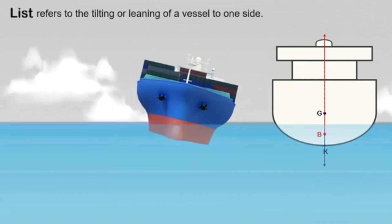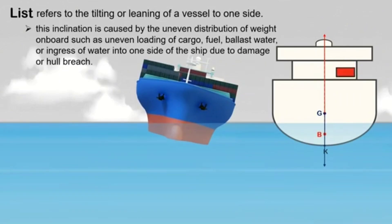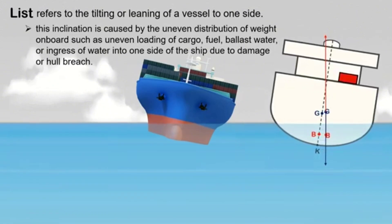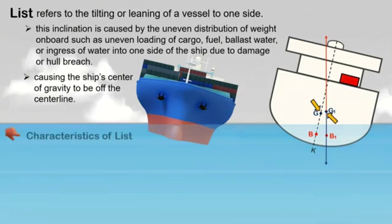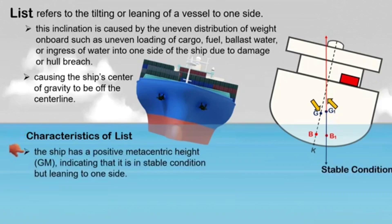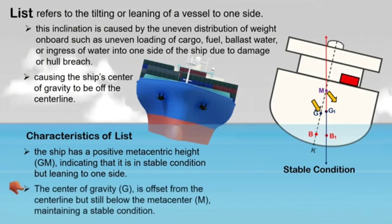This inclination is caused by the uneven distribution of weight on board, such as uneven loading of cargo, fuel, ballast water, or ingress of water into one side of the ship due to damage or hull breach, causing the ship's center of gravity to be off the centerline. The characteristics of list are: the ship has a positive metacentric height GM, indicating that it is in stable condition but leaning to one side. The center of gravity G is offset from the centerline but still below the metacenter M, maintaining a stable condition.